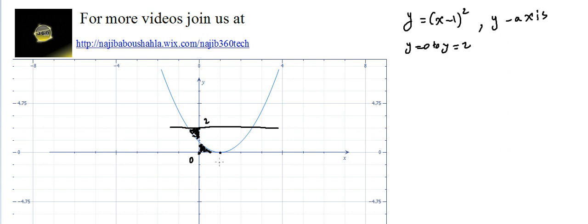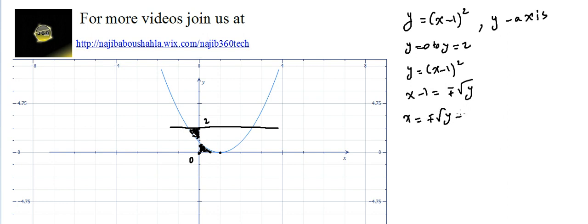The important thing here is when we change y equal (x minus 1) squared to x in terms of y, we get x minus 1 — without the square — equal plus or minus radical y. So x equals plus or minus radical y plus 1.